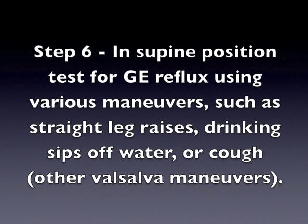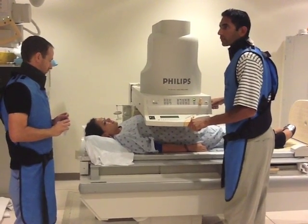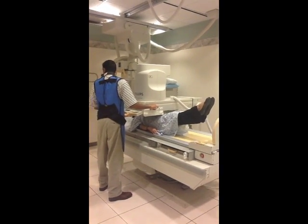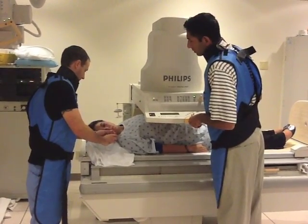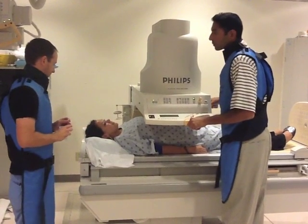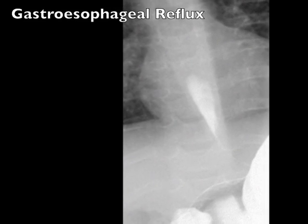Step 6: In the supine position, test for gastroesophageal reflux using various maneuvers such as straight leg raises, drinking sips of water, or coughing and other Valsalva maneuvers. Prior to performing the maneuvers, fluoroscopy over the GE junction to ensure that there is not a large amount of residual contrast in the esophagus. If there is, have the patient take several dry swallows. This is an example of gastroesophageal reflux.